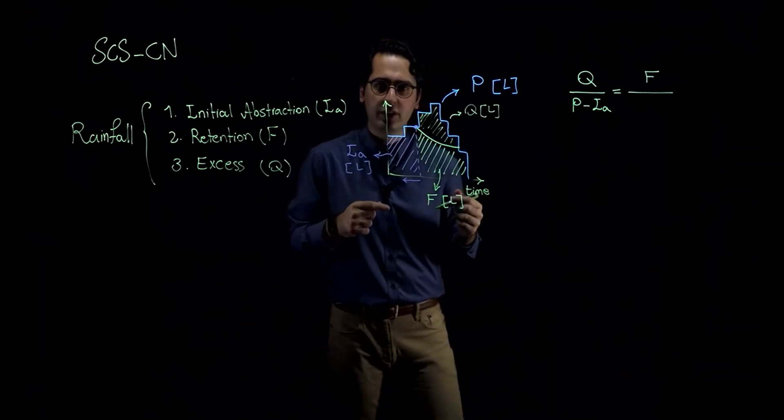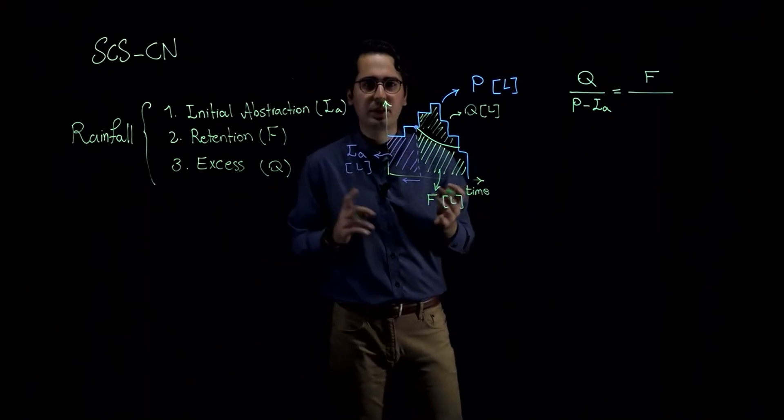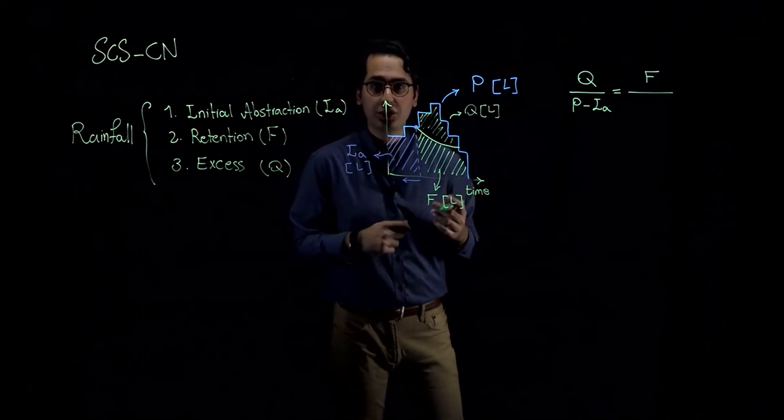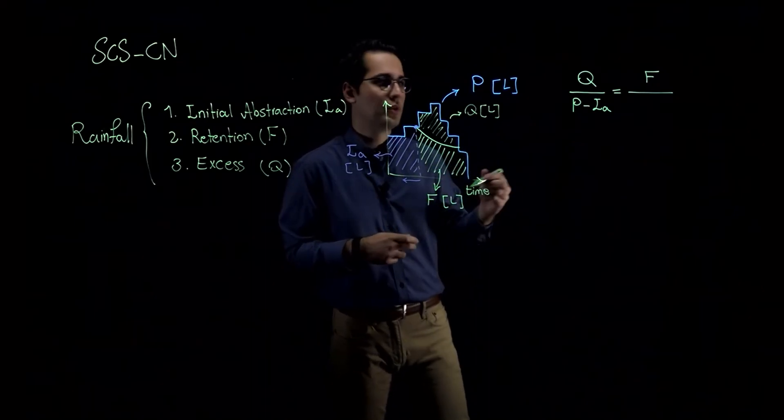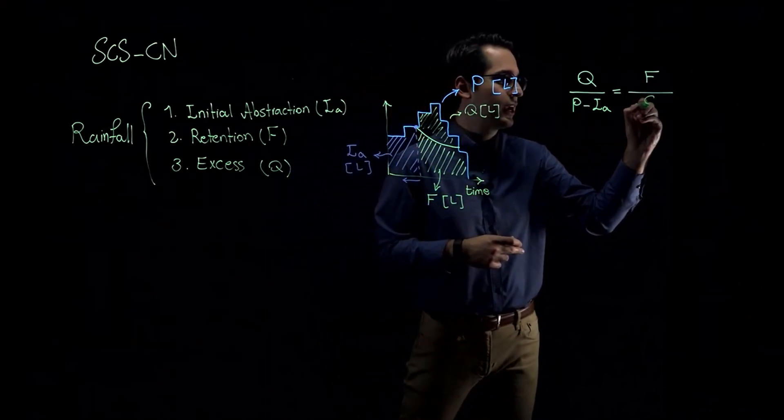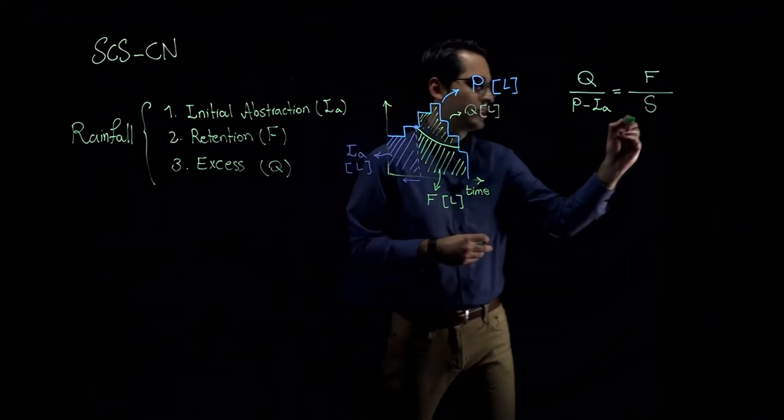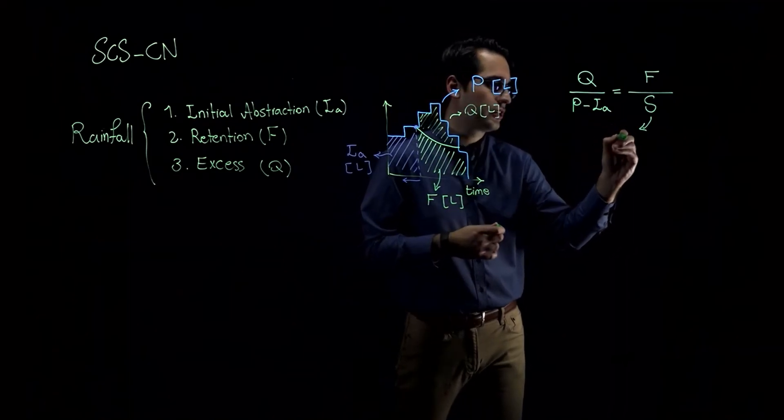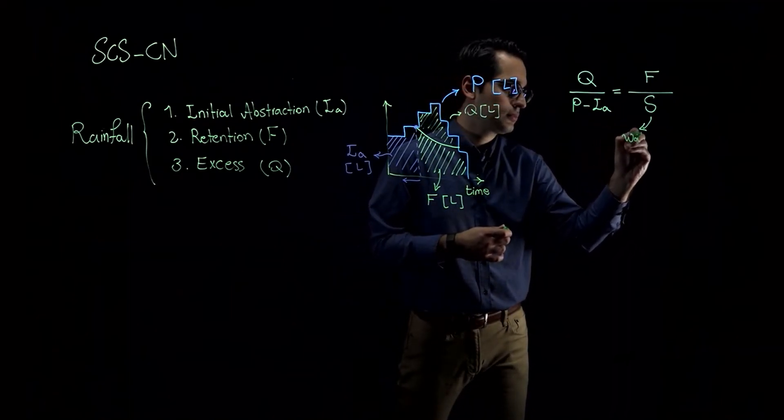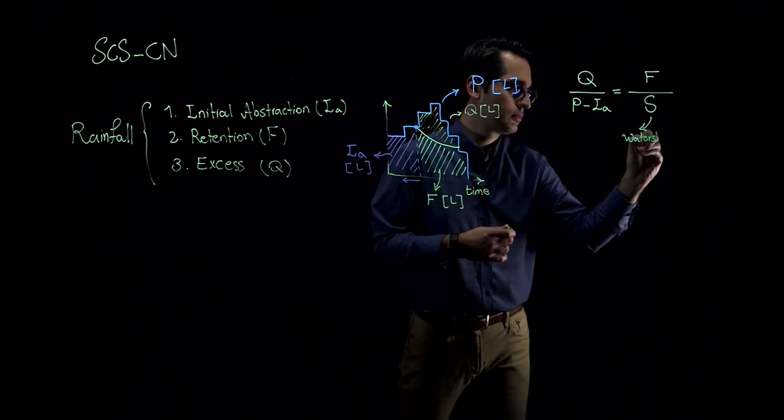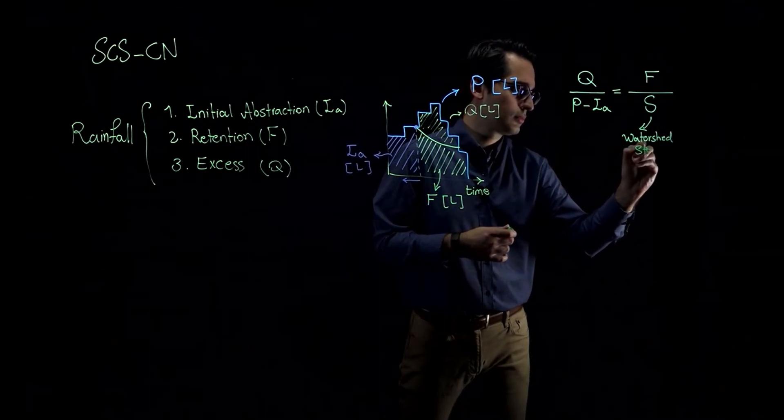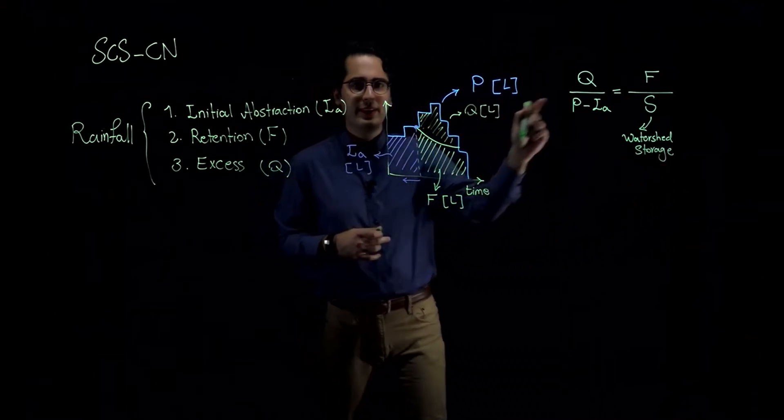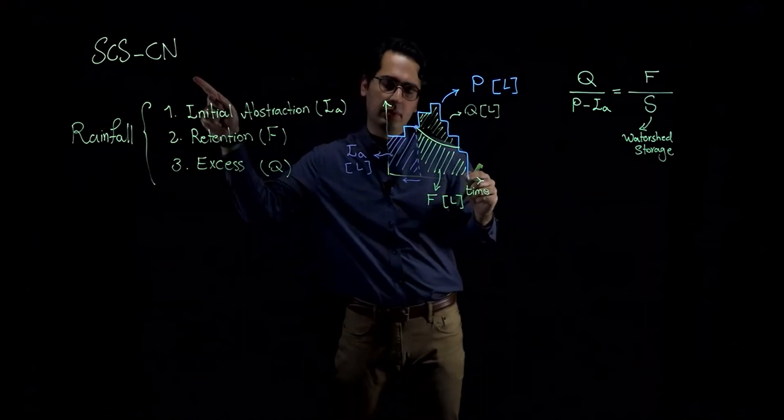Potential retention has different names in different references. Some people call it potential retention, maximum retention, or watershed storage is another name for this variable S that I'm defining over here. So this S, I'm going to define it as potential retention, maximum retention, or watershed storage. So this is the critical assumption behind SCS curve number method.